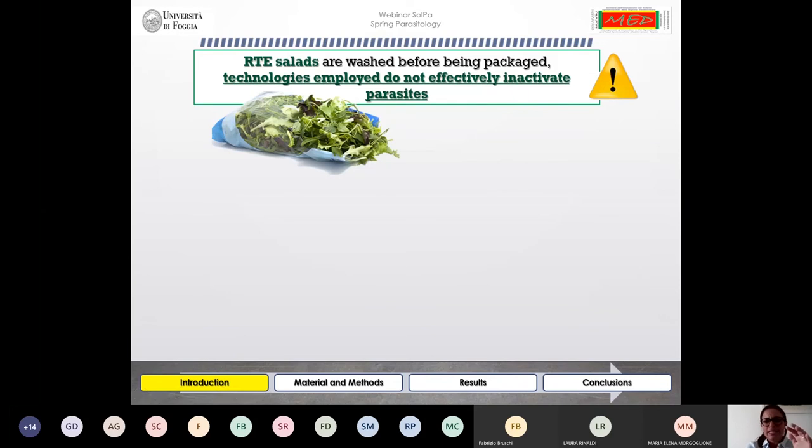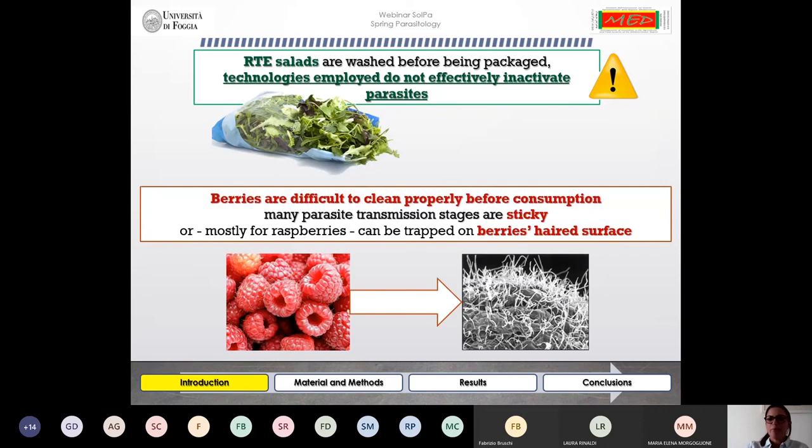Ready-to-eat salads are washed before being packaged, however the technology we employ does not effectively inactivate parasites that may be present. It is the same for berries, which are very difficult to clean properly before consumption. Many parasite transmission stages are sticky and can be trapped on the berry surface, particularly for raspberries whose surface is very hairy.